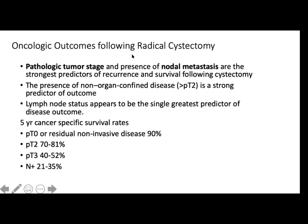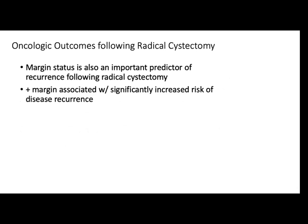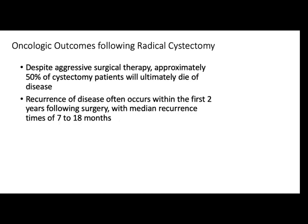Outcomes: pathologic stage and nodal metastasis are the strongest predictors of recurrence and survival. A pathologic T2 is a strong predictor of outcome. Five-year survival rates are available. Other prognostic factors for radical cystectomy include molecular markers, surgical experience, hospital volume, and age. Positive margin and positive lymph nodes increase the risk of recurrence.